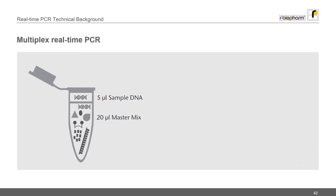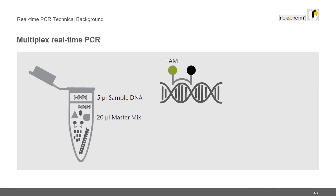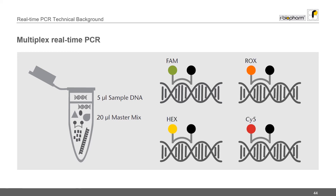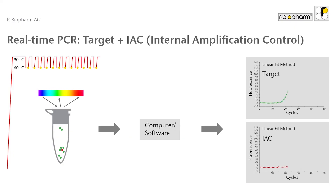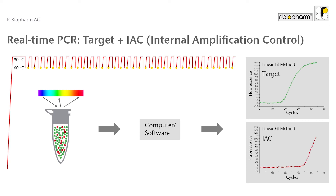Multiplex real-time PCR is a technique in which more than one target is detected in the same real-time PCR reaction. Each target is distinguished by a certain dye. During a multiplex PCR run, different reporter molecules are used. FAM is a green reporter and is used most commonly. The rBiopharm fourplex PCR kits also use VIC, ROX and CY5. Every reporter dye emits light at a different wavelength and can be read through separate detection channels. At the end of the analysis you get the result for three targets and the internal amplification control.